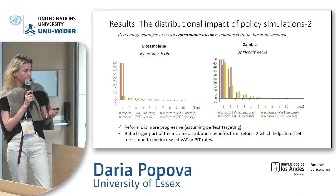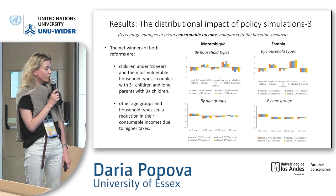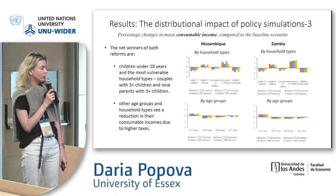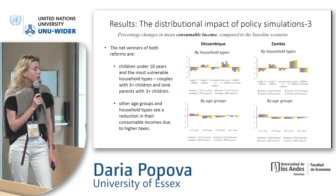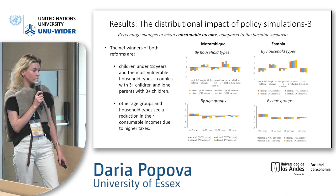In terms of net winners of both reforms, these are children under 18 years and the most vulnerable household types with the highest poverty rates — couples with three or more children and lone parents with three or more children — while other age groups and household types see a reduction in their consumable incomes due to higher taxes.